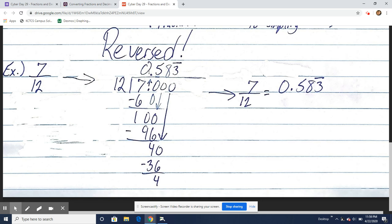12 goes into 7 zero times. So we automatically create a decimal place there, remember, and bring it up. Then we can add placeholder zero. 12 goes into 70 five times. 5 times 12 is 60. Do our subtraction. We get a remainder of 10. Bring down our 0. Now we have 100.